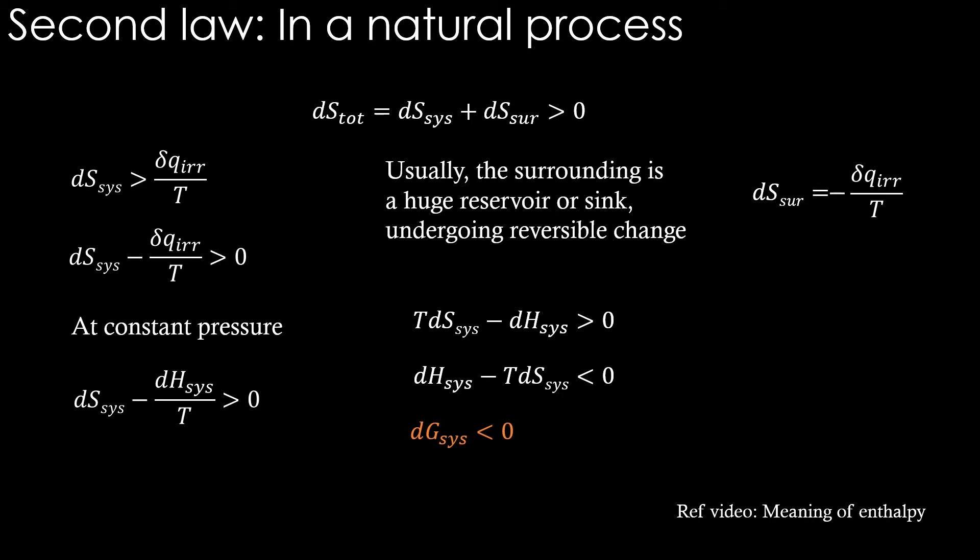In fact, the change in the surrounding is quite elegantly accounted here. Look at this term. This dH_system came from this term. It is essentially the dQ_irreversible divided by T term which is equal to the entropy change of the surrounding. So if we bother about the Gibbs energy change of the system, it automatically takes care of the change in the surrounding.